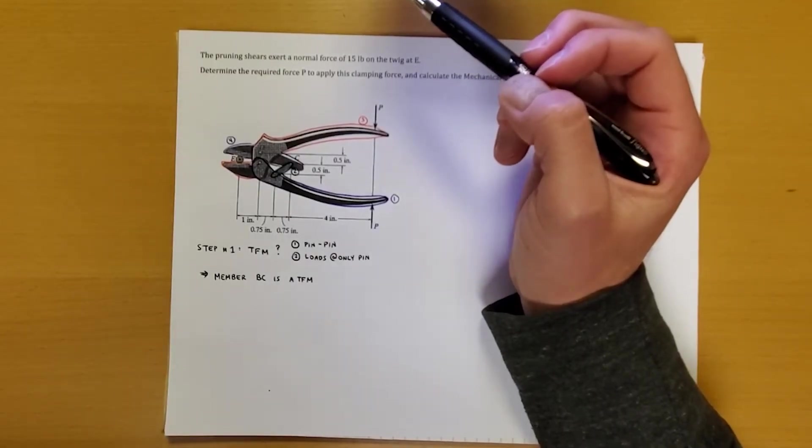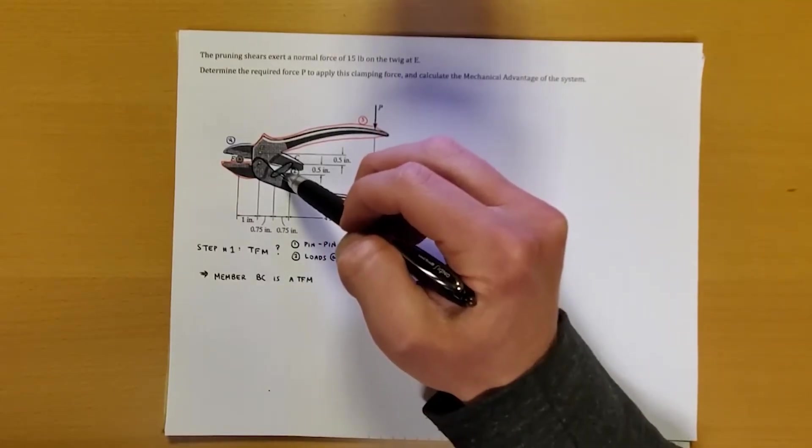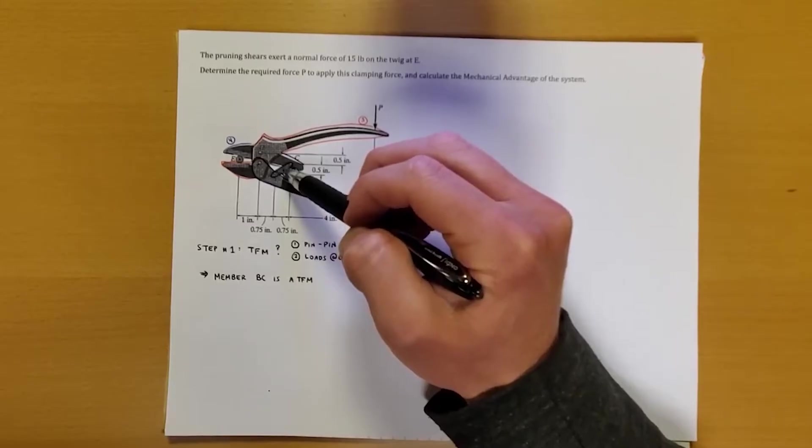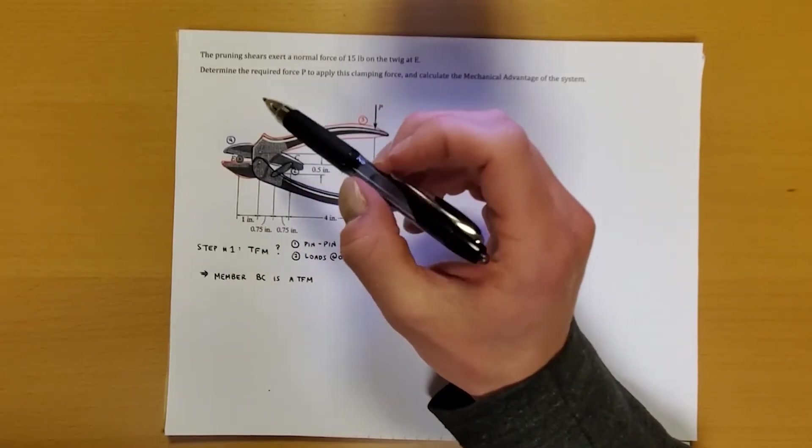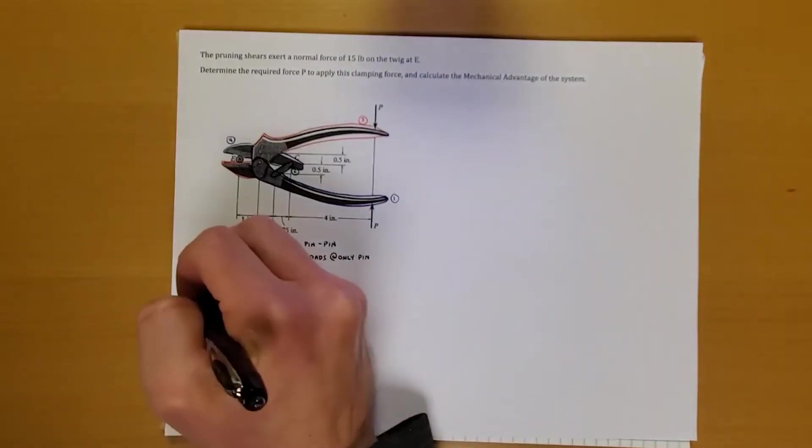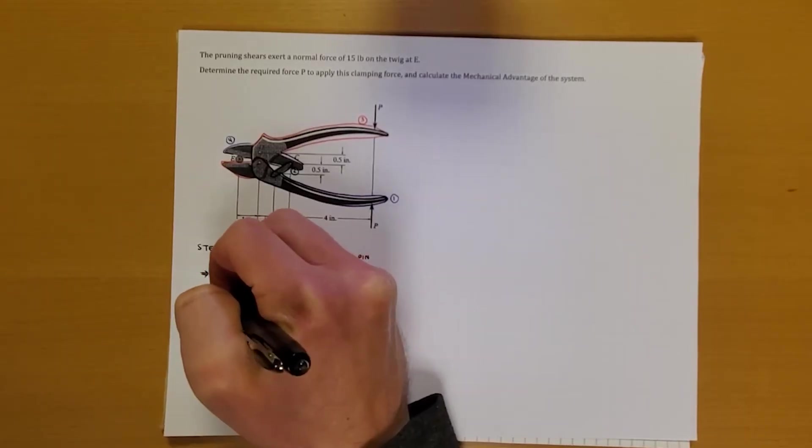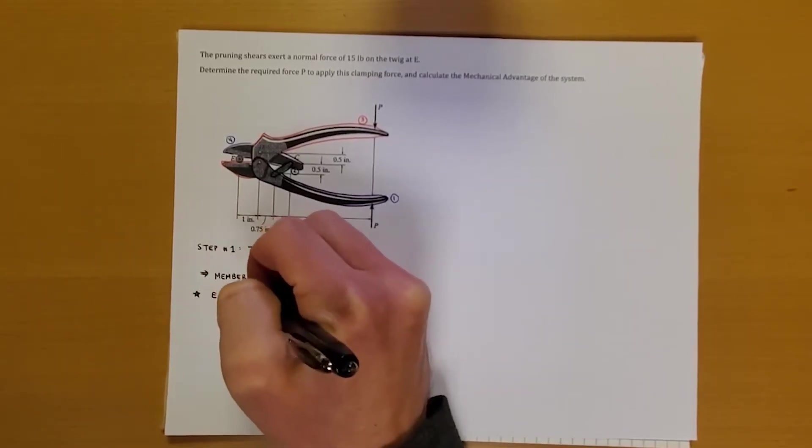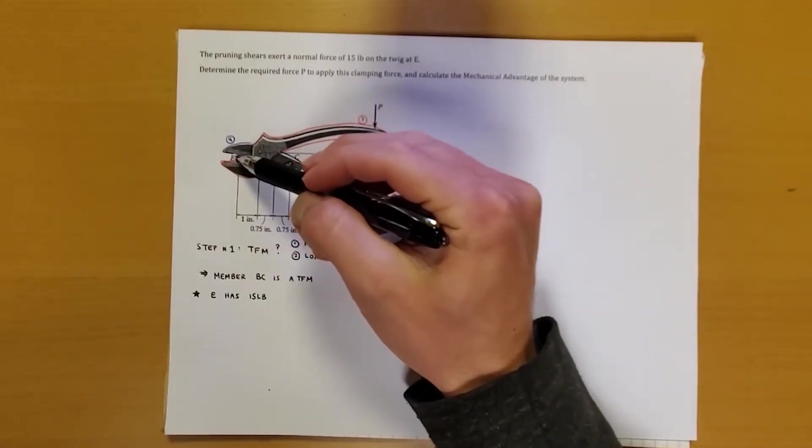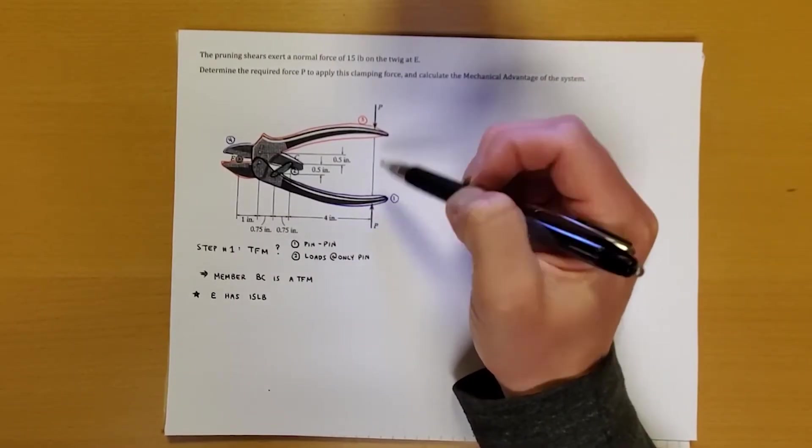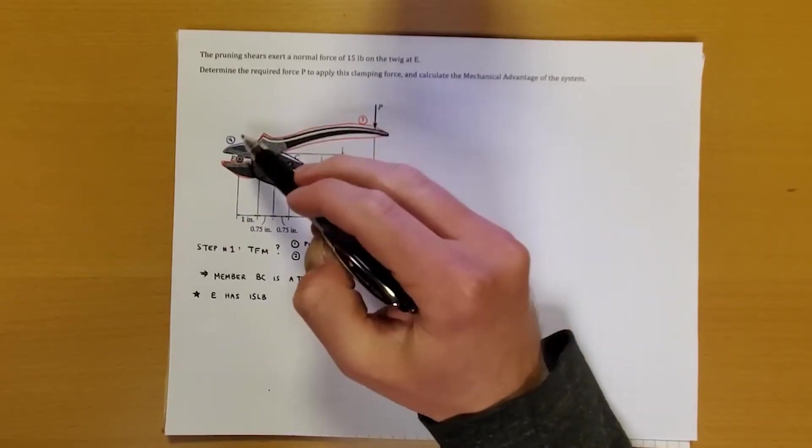So essentially what we can do to solve this problem is one of two things. We know that we're going to need to use pieces that are connected to our two-force member. So that tells us we either need to go to shape one or to shape four. Now, let's look. Essentially what we know we need to do is we need to work from the fact that E has a 15-pound force at it. So we know stuff at E. What we're trying to figure out is P. So essentially we need to kind of work our way from here back to P or from P to point E.